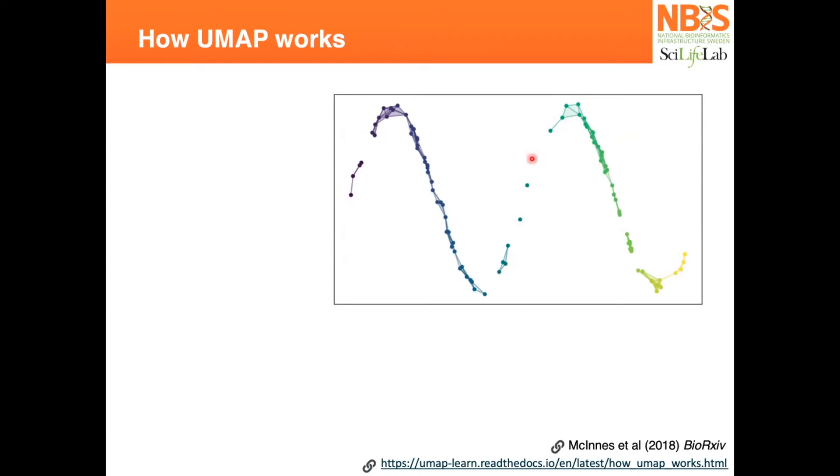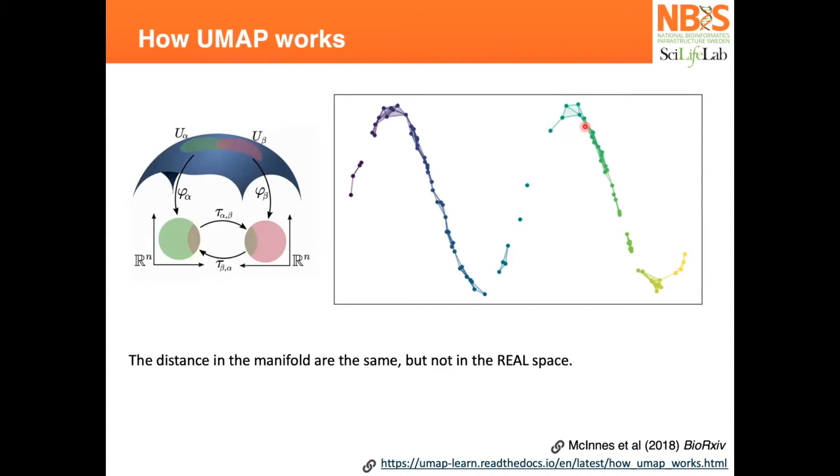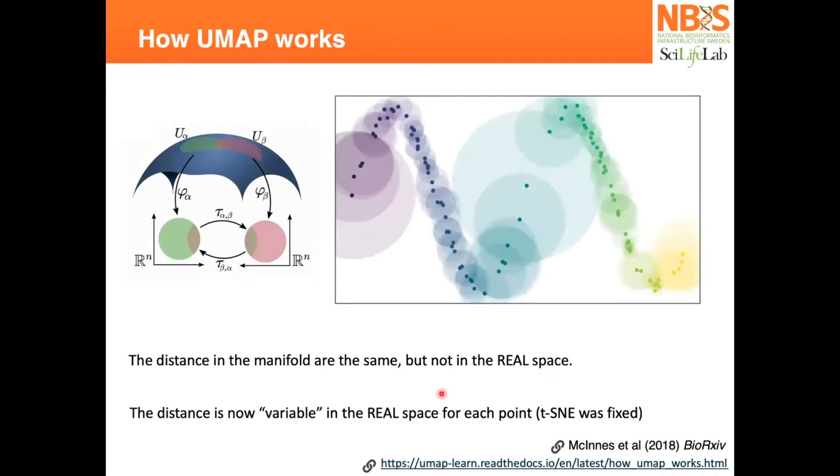UMAP stands for Uniform Manifold Approximation and Projection. You try to convert the real space to this uniform manifold so you can convert the distance between these points to be the same as the distance between these points. The distances in the manifold will be the same, but not in the real space.